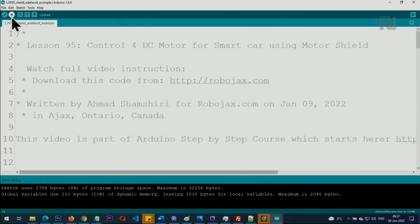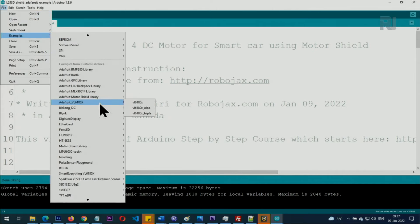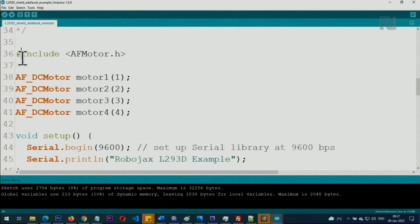The library has some examples. When you click on File, Examples, and Adafruit Motor Shield, these are the examples. But this is not ready for you to use directly, so I'm providing you this code. This line says that use Adafruit library, so this is including the library and here the fun begins.